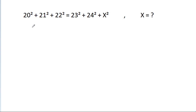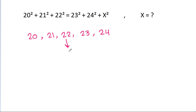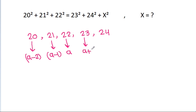So we have 5 numbers: 20, 21, 22, 23, and 24. If 22 is a, then 21 will be a−1, and 20 will be a−2, and 23 will be a+1, and 24 will be a+2.